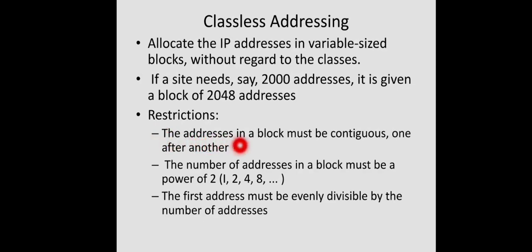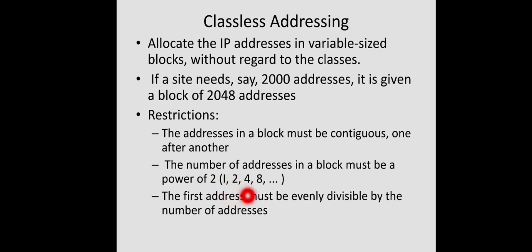The three restrictions are: first, the addresses in a block must be contiguous, one after another; second, the number of addresses in a block must be a power of 2; and third, the first address must be evenly divisible by the number of addresses in the block. We will see an example for this.